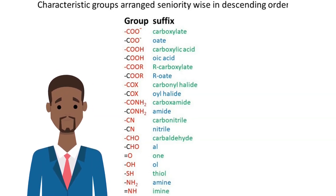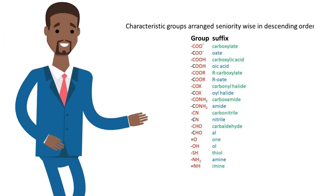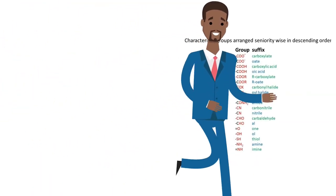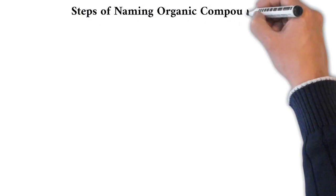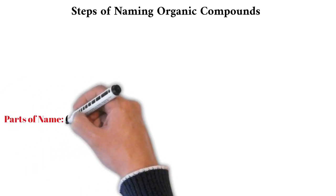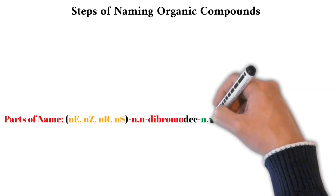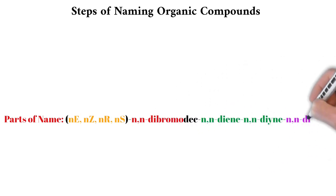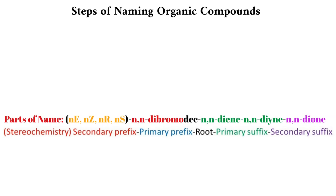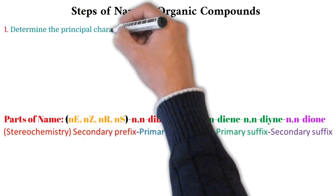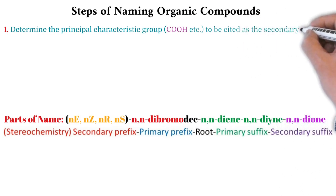Now let me show you the steps of naming an organic compound. The organic compound's name is composed of different parts. There is one additional part at the beginning of the name enclosed in parenthesis — this shows the stereochemistry of the compound, that is the E and Z system or S and R system. The first step in naming any organic compound is to determine the principal characteristic group to be cited as the secondary suffix. It is also called the functional group — for example, the COOH group, for which the suffix used is '-oic acid'. This part comes at the end of the name.